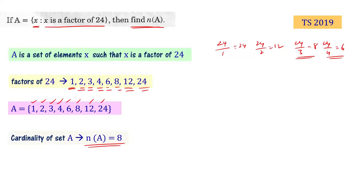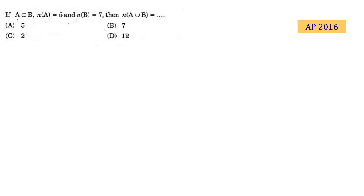Now let's look at this problem. If A is a subset of B, n(A) equals 5 and n(B) equals 7, then what is the value of n(A∪B)?